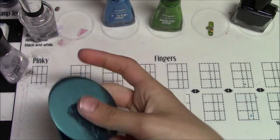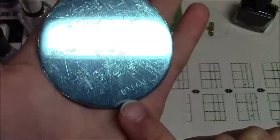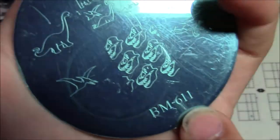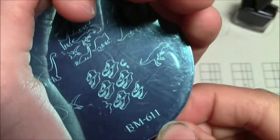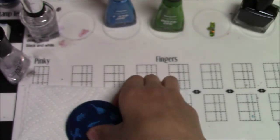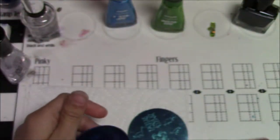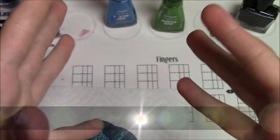The plates we'll be using are, let's see, Bundle Monster 611, I mean 611, and Mash 74. So let's get started.